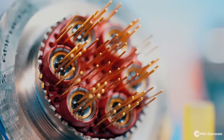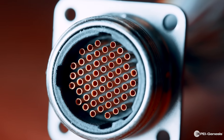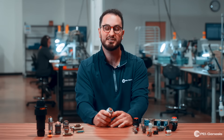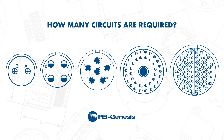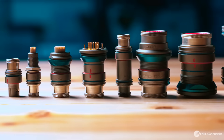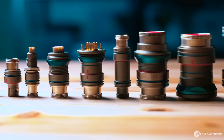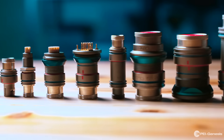Next, we need to figure out how many circuits are required. How many circuits equals how many wires, and how many wires translates to how many contacts we need. Together, the number of circuits with the gauge of the wire will influence the layout needed in your connector. You will need to be sure that the connector series you select will have the layout that suits your needs.